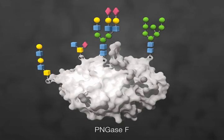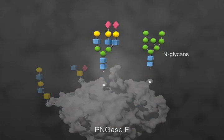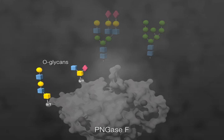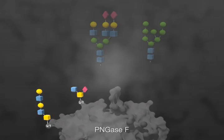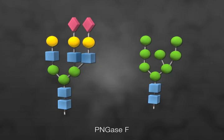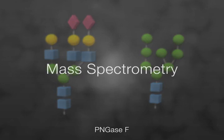PNGase F is able to remove most N-glycans as an intact glycan molecule. If present, the O-glycans remain attached to the protein. The released glycans are intact and are ready for further characterization using analytical methods, such as mass spectrometry.